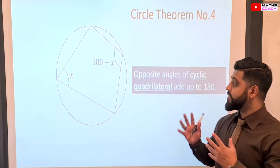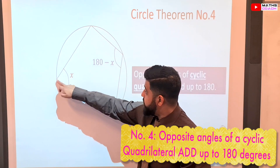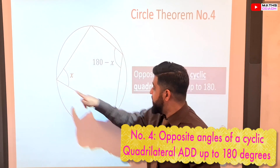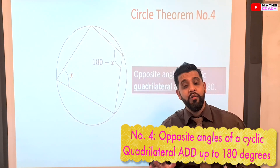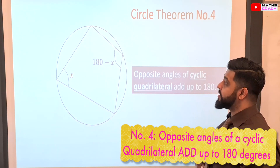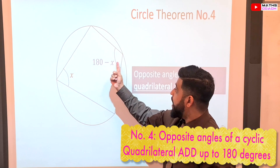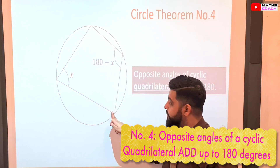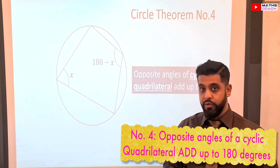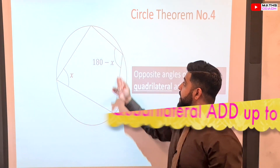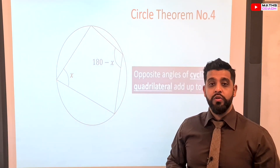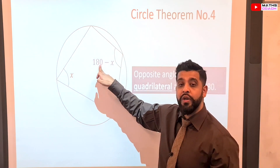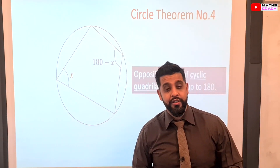Circle theorem number four: the cyclic quadrilateral. It's very important to note that all four vertices — the corners — must touch the circumference of the circle; otherwise you cannot apply this rule. The rule is that opposite angles of a cyclic quadrilateral add up to 180 degrees. The interior angles of a quadrilateral all equal 360 degrees. For example, if one angle is 50 degrees, the opposite angle is 180 minus 50, which is 130 degrees.